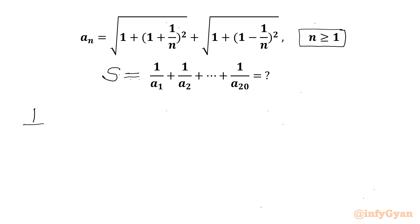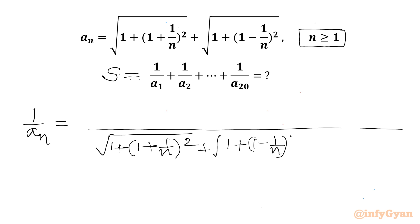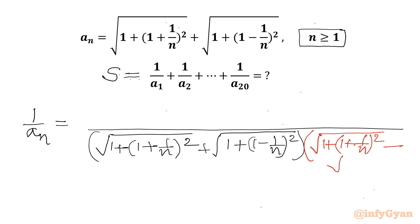Now I will consider the value of 1/aₙ, so I need to consider the reciprocal — our term will be in the denominator now. I will write √(1 + (1 + 1/n)²) plus √(1 + (1 − 1/n)²). Now we have to rationalize our denominator, so I will multiply numerator and denominator by the denominator's conjugate: √(1 + (1 + 1/n)²) minus √(1 + (1 − 1/n)²).